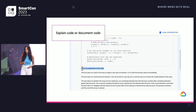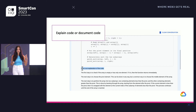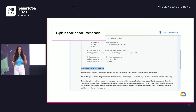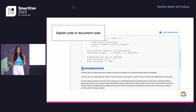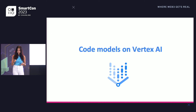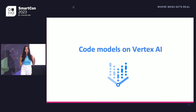We can also use these models for more wordy tasks — generating more than just code. We can generate documentation and explanations. Here I've instructed the model to generate an explanation of some Python code that does quicksort. Whatever your use case is, there are lots of different tools out there.